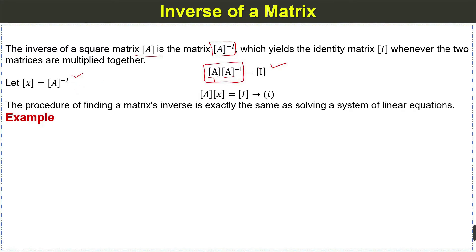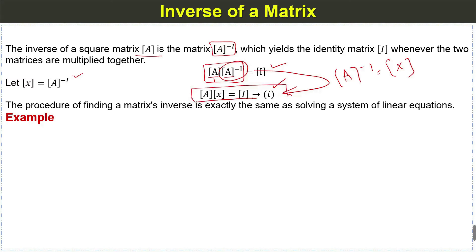We suppose X is equal to the inverse of matrix A, and we can write the system as AX = I. This is equation 1, and we know how to solve this system of equations. The procedure of finding a matrix inverse is exactly the same as solving a system of linear equations.